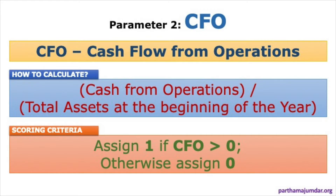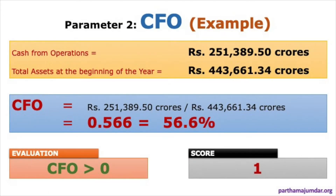The second parameter is Cash Flow from Operations. High cash flow indicates higher revenues, lower overheads, and greater efficiency. It is calculated as cash from operations divided by total assets at the beginning of the year. If cash flow from operations is greater than 0, Piotrowski assigns a score of 1; otherwise 0. From the 2017-18 annual report, cash from operations was nearly 251,000 crores, giving a CAFO of 0.566. Since CAFO > 0, the score is 1.